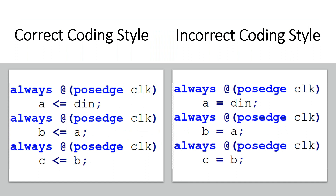To show the harmful effects of using blocking assignments in a sequential block, I have considered two codes. This is the correct coding style wherein I am using non-blocking assignments, and this is the wrong coding style wherein I am using blocking assignments. First, we will see what logic is generated by the logic synthesizer for both these codes, and then we will see functional simulation for both — and that will clarify the difference.